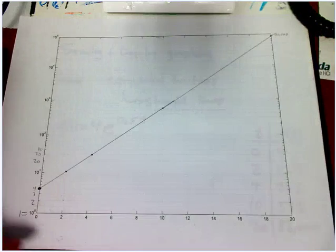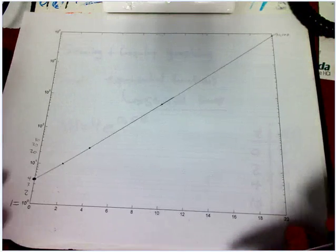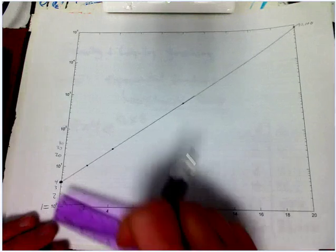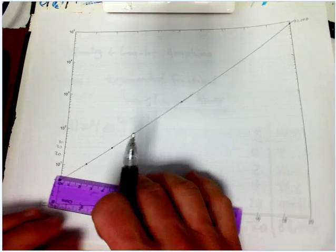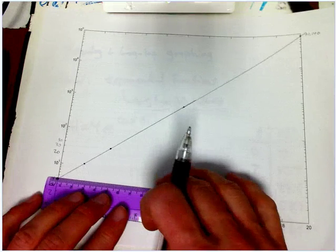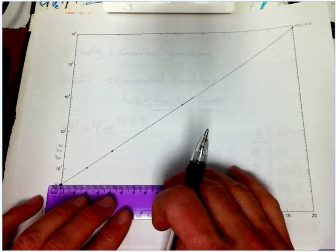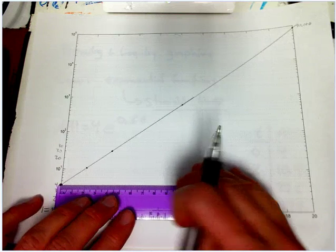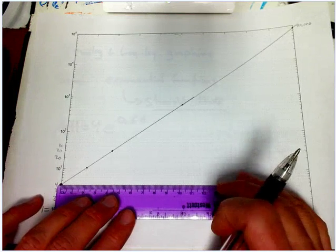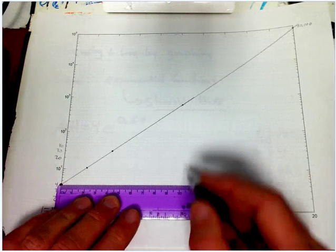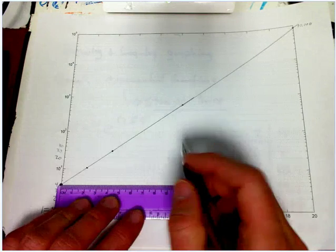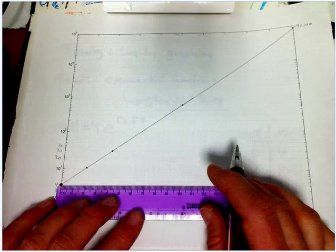The cool thing is that all these points actually lie on a straight line. And I want to make that a little more quantitative. What we observe when we do this in class is that not only do exponential functions become straight lines, but the slope of the line is proportional to the rate constant.